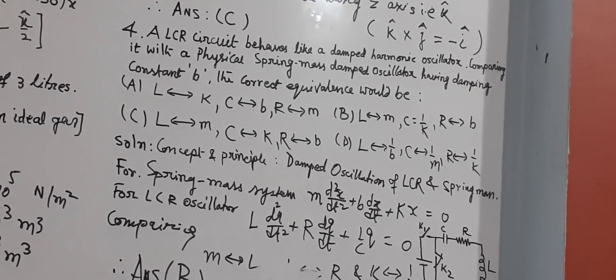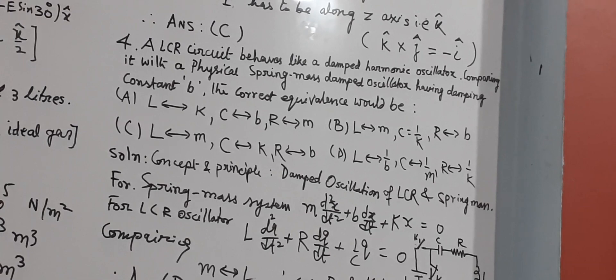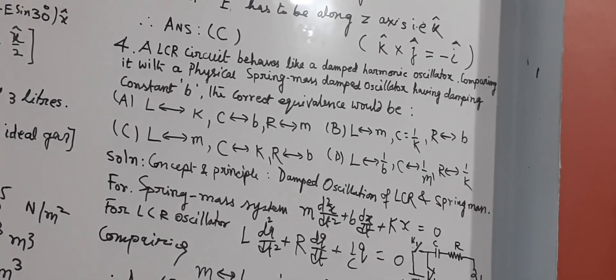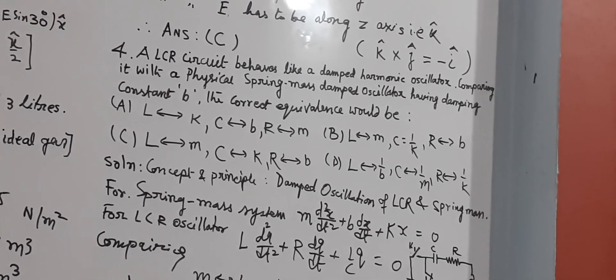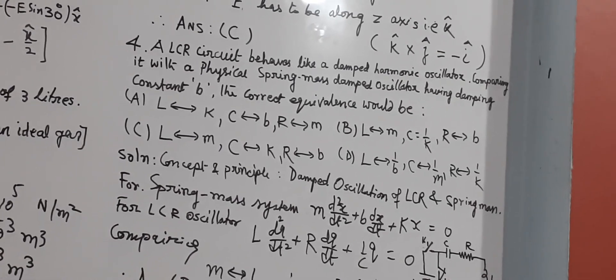And that is minus Q by C, potential drop across capacitor, resistance minus IR, and then minus L di by dt, sum of this three will be 0, putting I equal to dq by dt, then you can get this equation. Thank you very much.